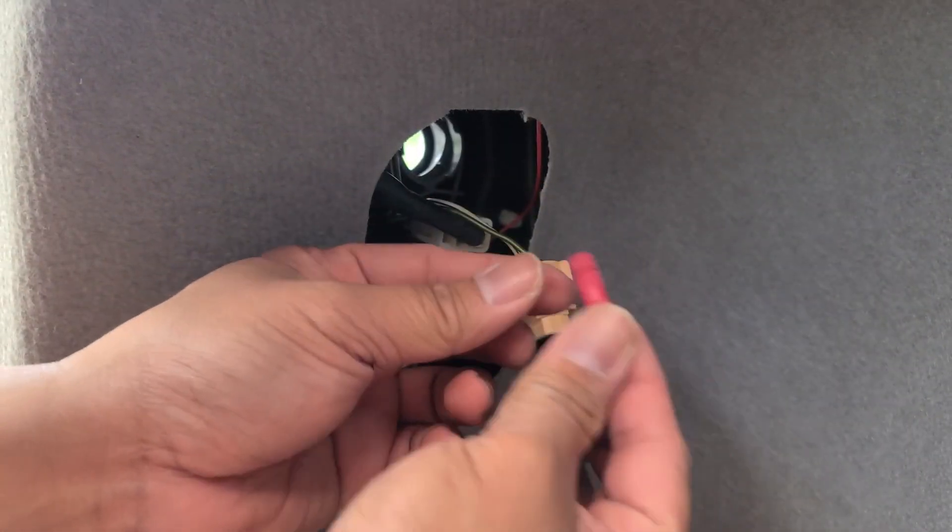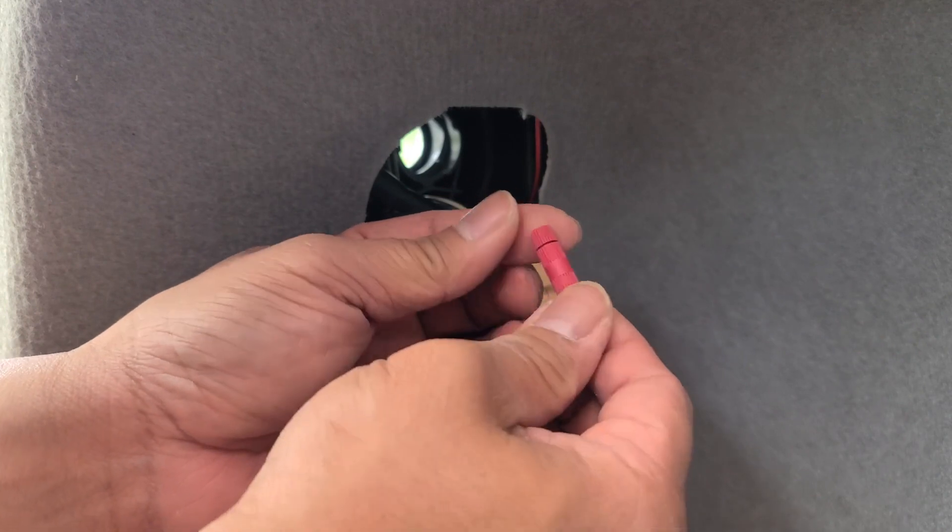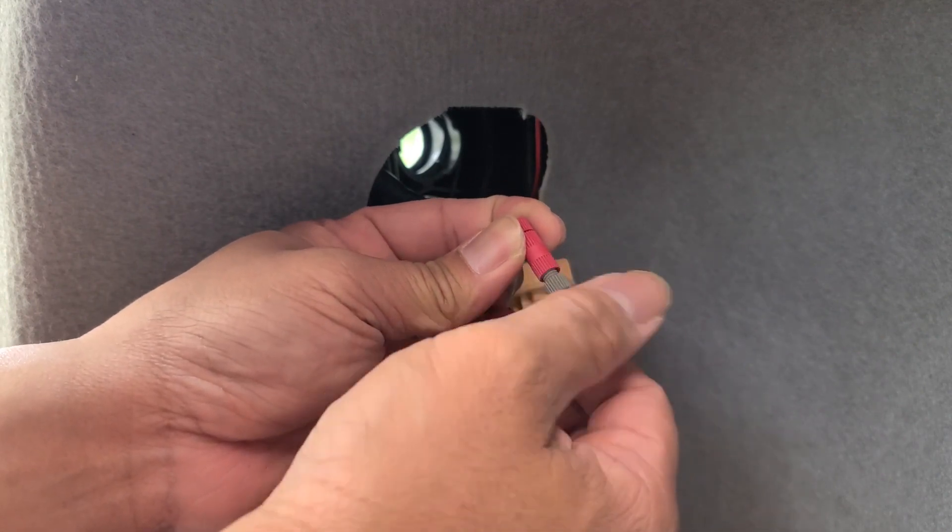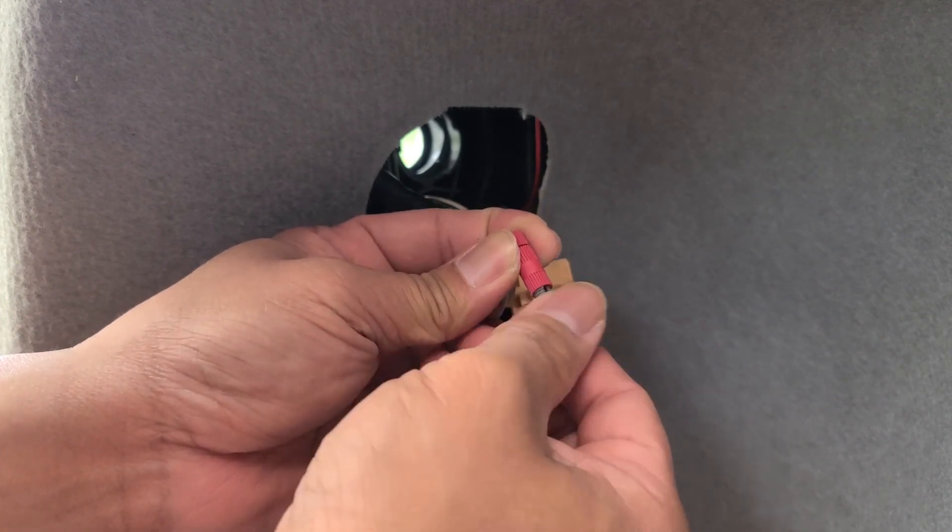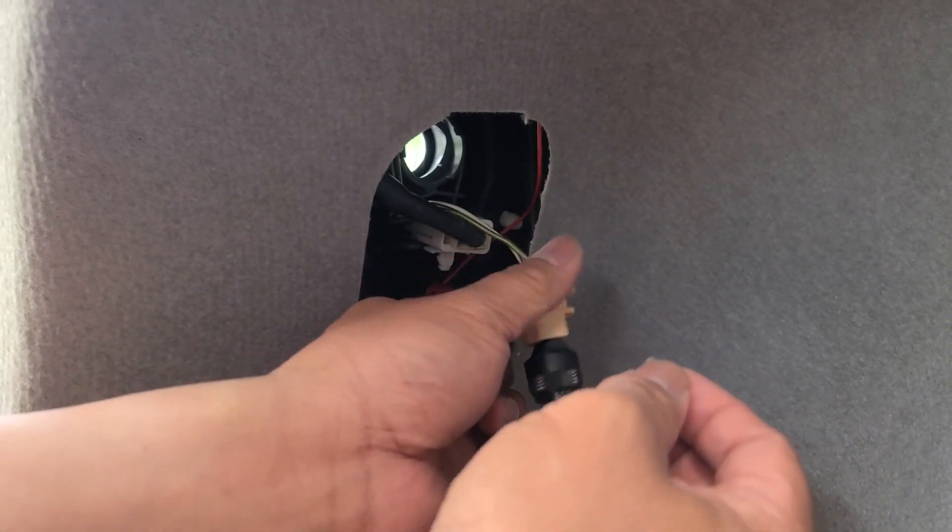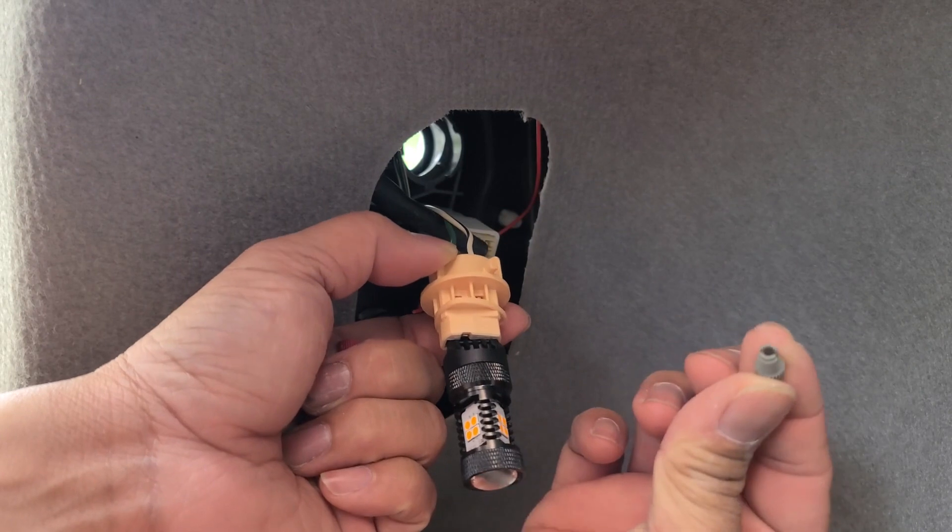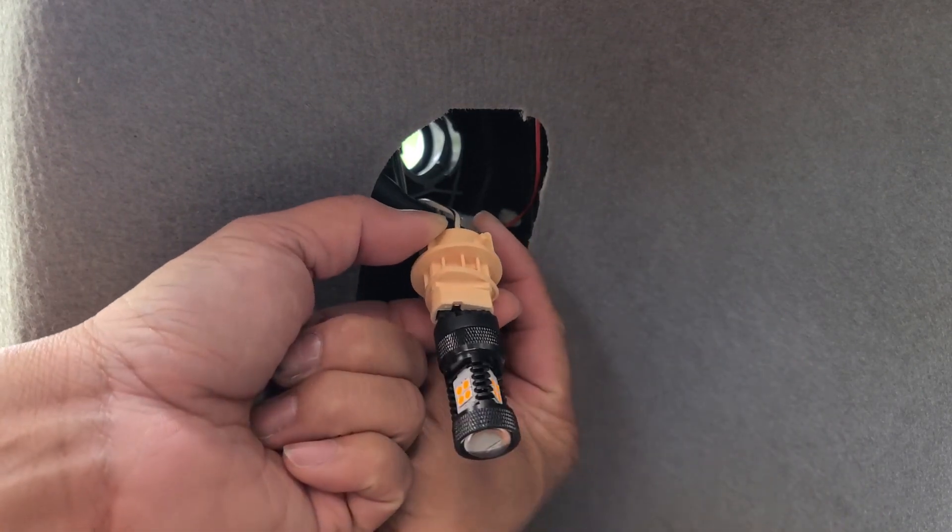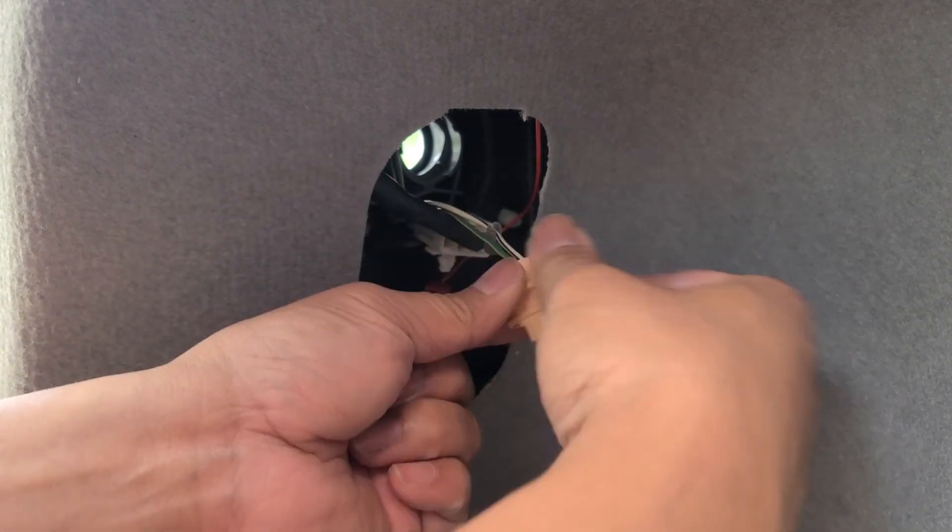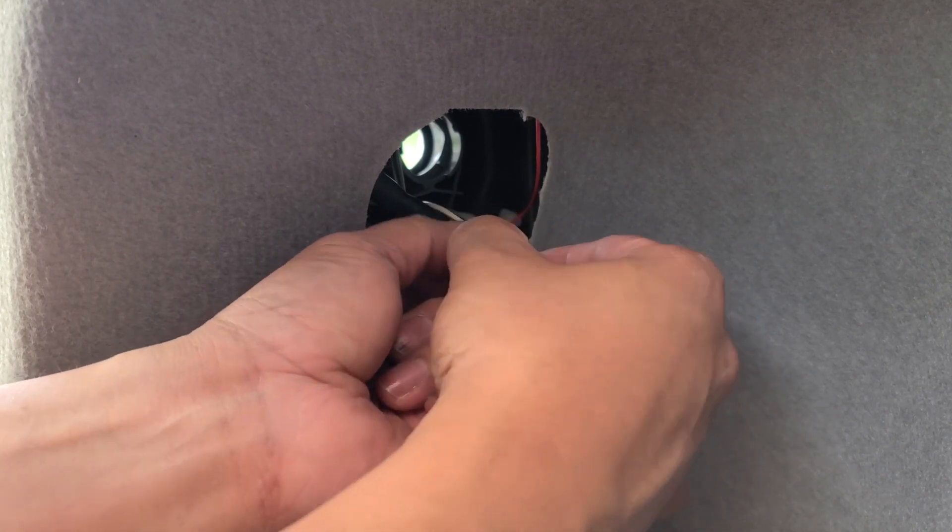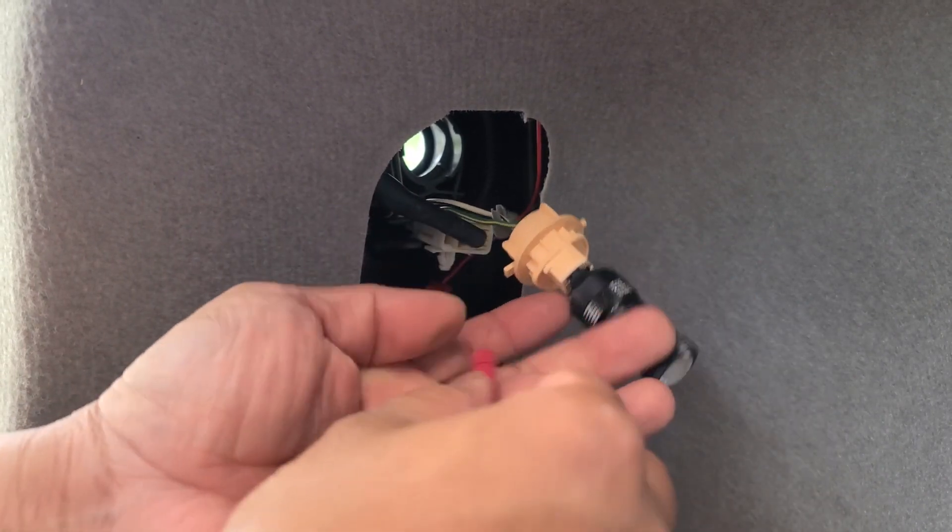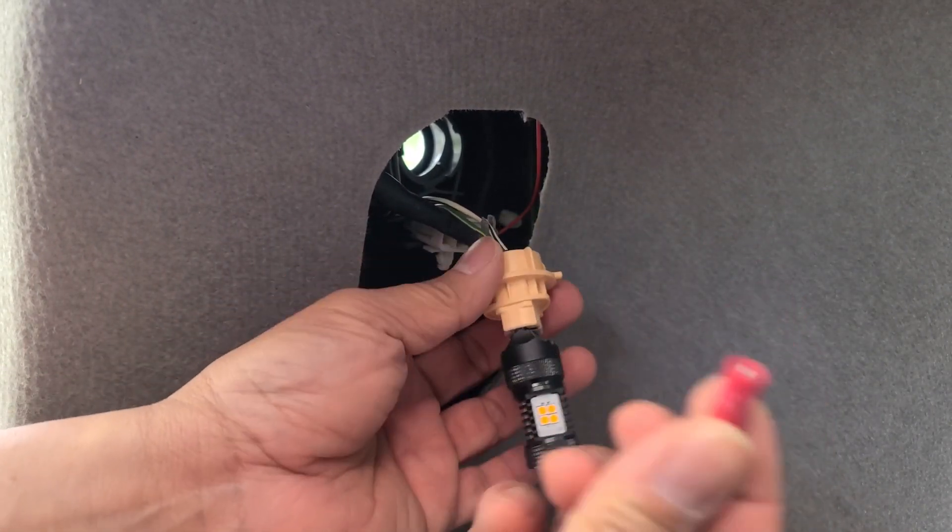First thing you want to do is grab a posi tap, unscrew the gray portion, connect it, push it through one of the wires, just like so, and then screw the other end back.